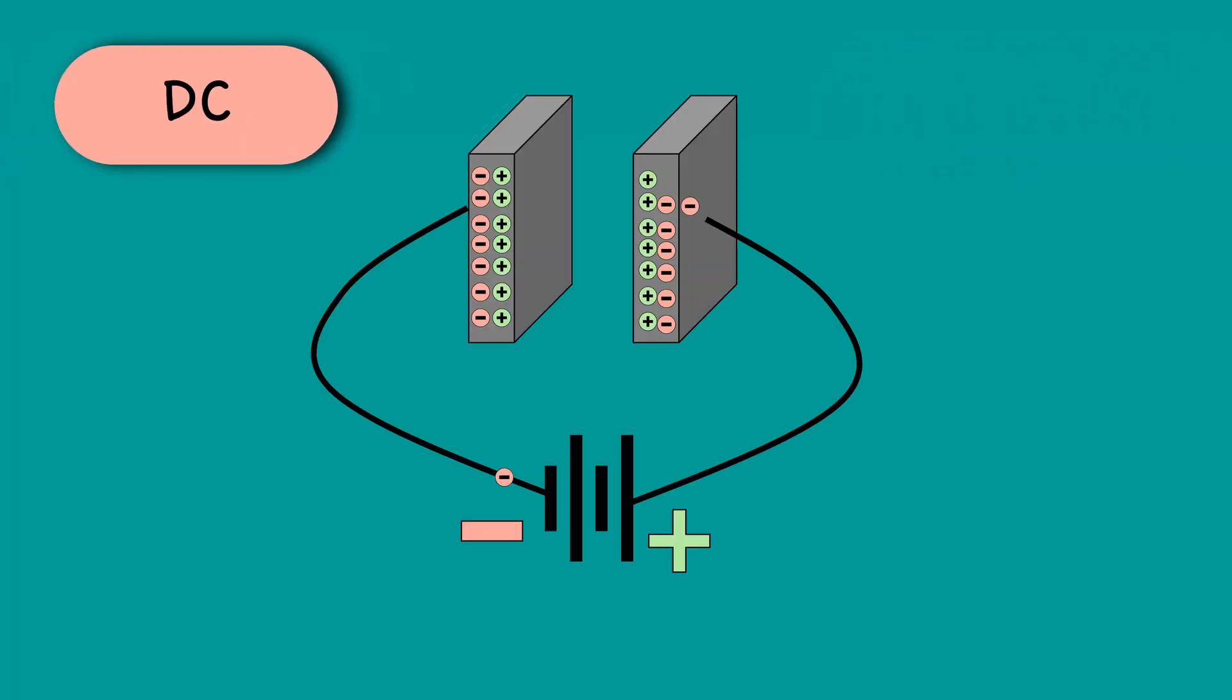We have DC and AC supply. When a DC supply is applied across a capacitor, it starts charging. Once a capacitor is fully charged, the current doesn't flow, and the circuit will act like an open circuit.